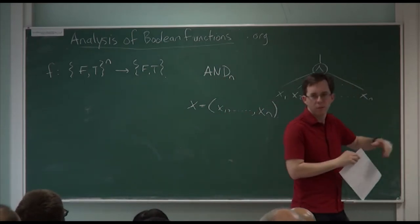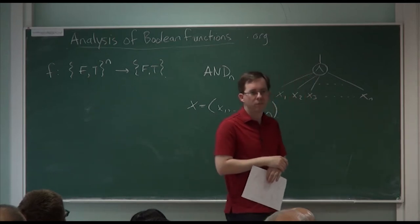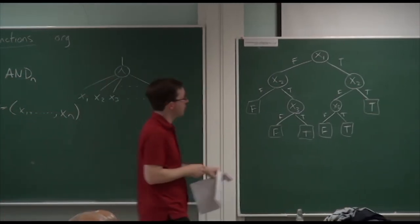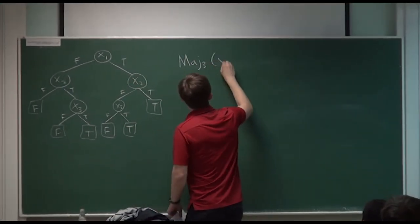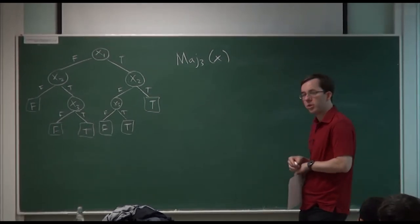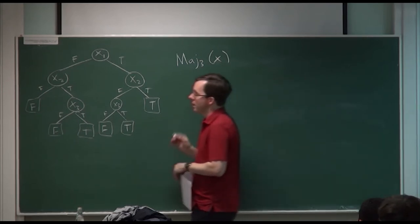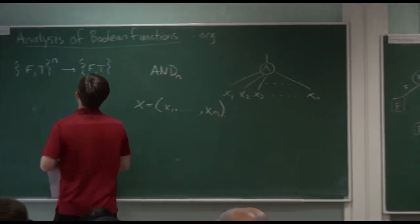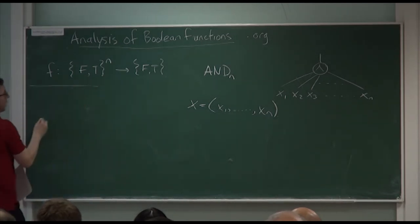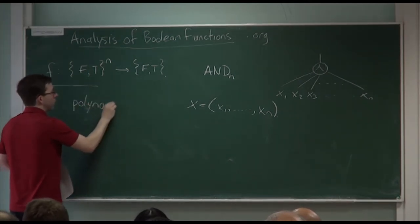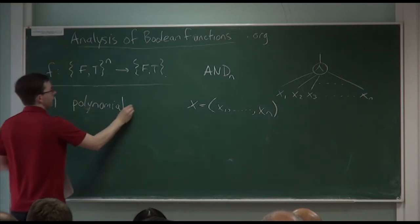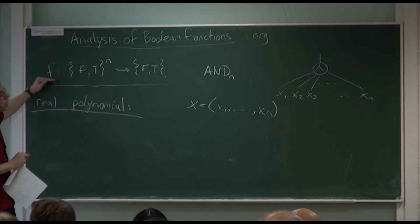Does anybody recognize what function this decision tree is representing? It's the majority function on 3 inputs. This is a 3-input function — majority sub 3 of x, where x is x1, x2, x3. It outputs true if a majority of the 3 inputs are true, and outputs false if a majority of them are false. So Fourier analysis of Boolean functions is all about one particular representation we haven't seen yet: the representation of Boolean functions as real polynomials — polynomials with real coefficients.